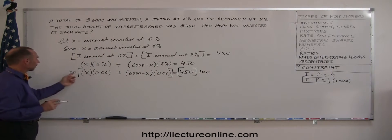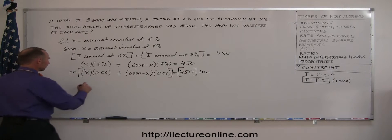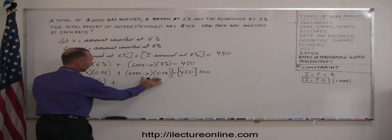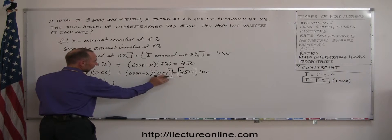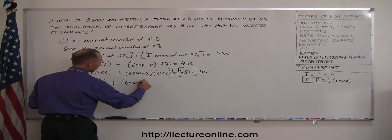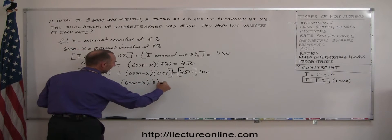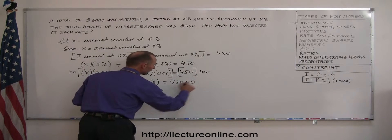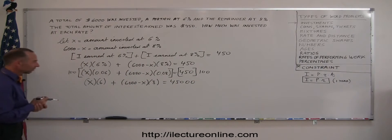Okay, 100 times this—well, 100 times 0.06 gives me 6, that's X times 6, plus 100 times this. When I multiply this, I get 8 instead of 0.08, so this gives me 6,000 minus X times 8, and that equals 450 with two more zeros, because now I'm multiplying that times 100, so I get 45,000.